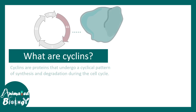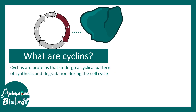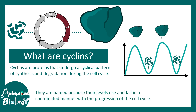So what are cyclins? Cyclins are proteins that undergo a cyclical pattern of synthesis and degradation, hence they are known as cyclins. In certain stages of the cell cycle they are produced, and in certain stages they are degraded. Their activity is restricted in a time-bound fashion, and their levels rise and fall in a coordinated manner with the progression of the cell cycle.